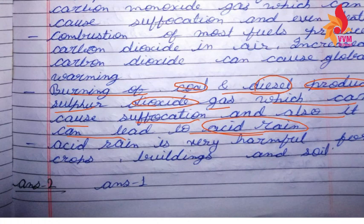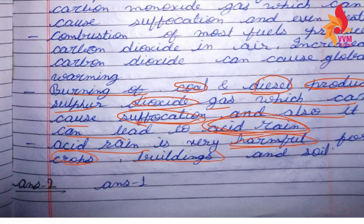Sulfur dioxide causes suffocation, and it also leads to acid rain. Acid rain produces acid, and this acid rain is harmful to crops, buildings, and soil — it destroys all of them.